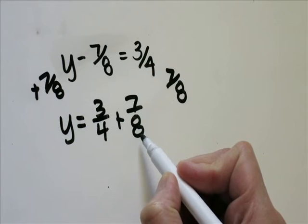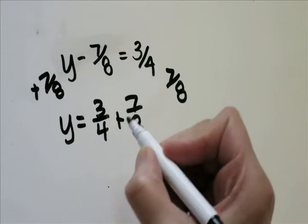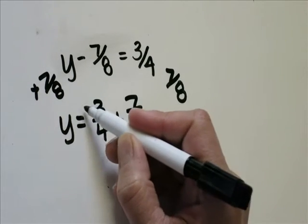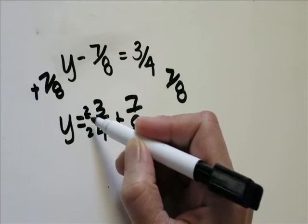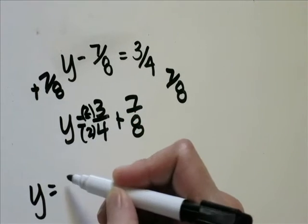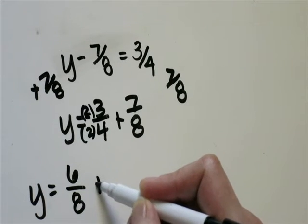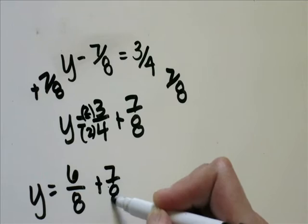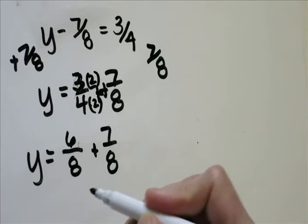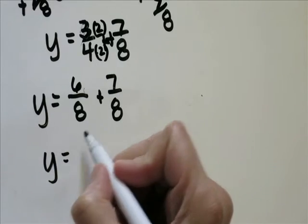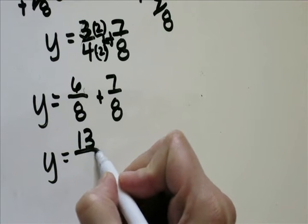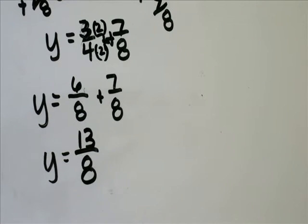The common denominator is going to be 8 because 4 can go into 8. Since 4 times 2 is 8, you'll multiply 2 over 2. 2 times 3 is 6, 2 times 4 is 8. So you'll end up with 6 eighths plus 7 over 8. 6 plus 7 is 13. y equals 13 over 8.